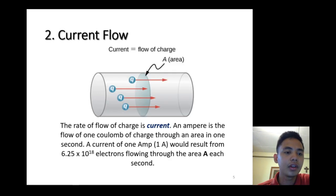Second, we need to talk about current. Current is a flow of charge. You have the charges flowing in a conductor with an area. The rate of flow of charge is current, and ampere is the flow of one coulomb of charge to an area in one second.